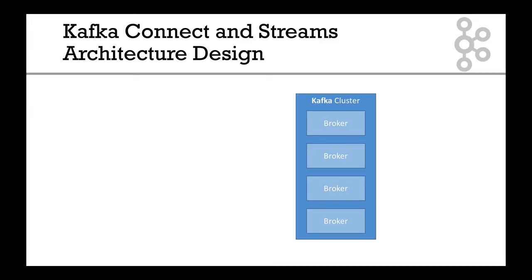Here's your Kafka cluster, and as we've seen, our Kafka cluster is made out of multiple brokers. In this example there are four brokers. Here are your sources — it could be a database, MongoDB, Twitter, whatever you want — and you want to put that source into your Kafka cluster.